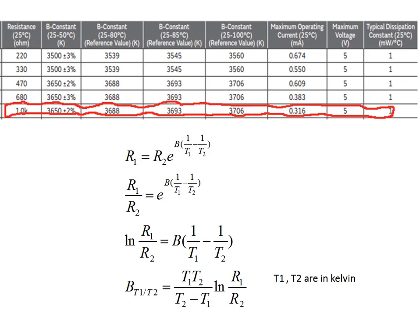A typical specification example for a 1 kΩ NTC thermistor shows that the B value varies with temperature range: 3650 K for 25–50°C, 3688 K for 25–80°C, 3693 K for 25–85°C, and 3706 K for 25–100°C. The maximum operating current is 0.316 mA, maximum voltage is 5 V, and the typical dissipation constant is 1 mW/°C — meaning every 1 mW of power due to self-heating causes a 1°C rise in temperature.